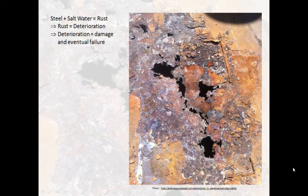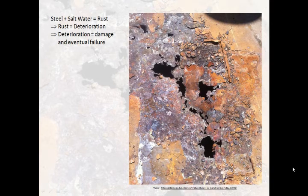All steel that is exposed to the elements will corrode, and except for select grades of steel, the continued corrosion will cause failure of the material. The most common form of steel corrosion is rust. Rust is the oxidation of iron in steel and can cause the steel to deteriorate, weaken, and ultimately fail.